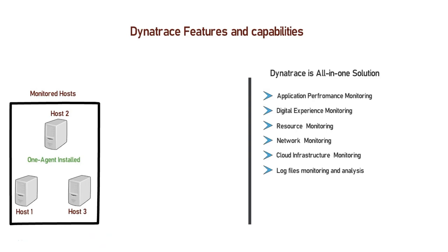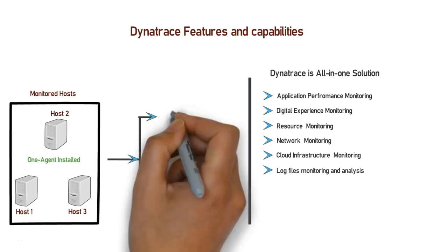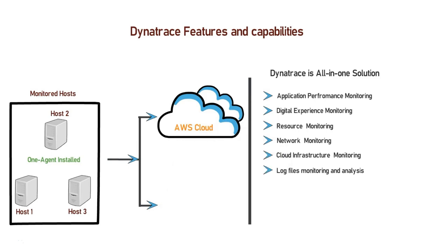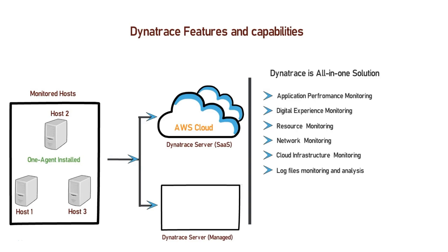For processing the collected data, we need Dynatrace servers, and for this Dynatrace provides two options. Dynatrace maintains highly available servers in the Amazon cloud and provides this as software as a service, which we can use for our monitoring. In case your organization does not allow cloud solutions, you can opt for Dynatrace Managed, where Dynatrace provides support to set up a cluster of Dynatrace servers on your own premises so you can enjoy all the features offered by Dynatrace.